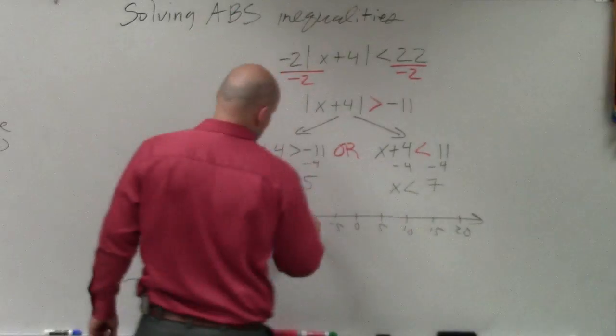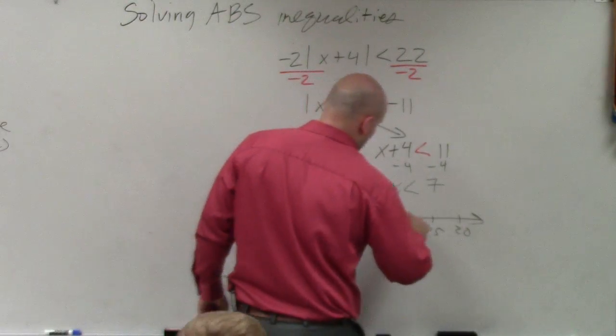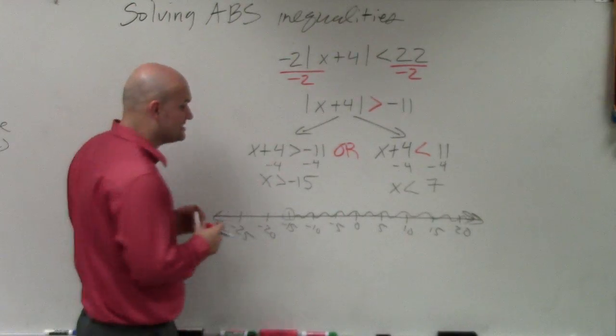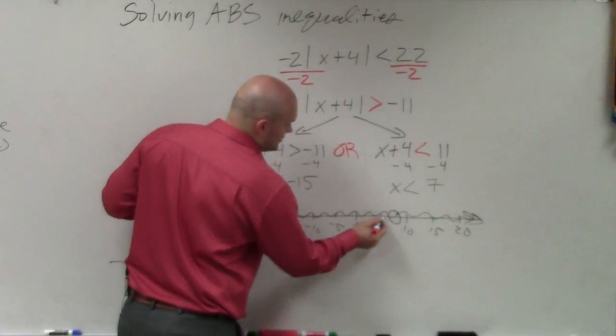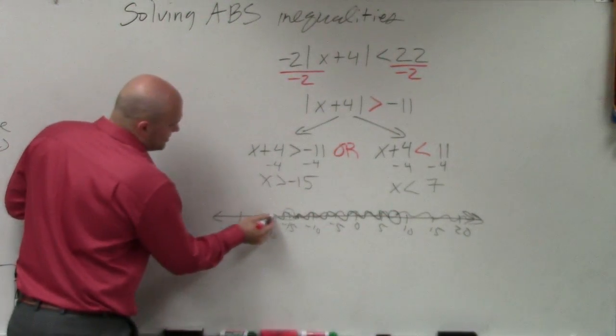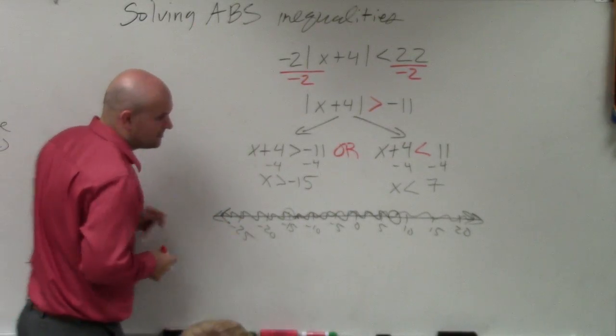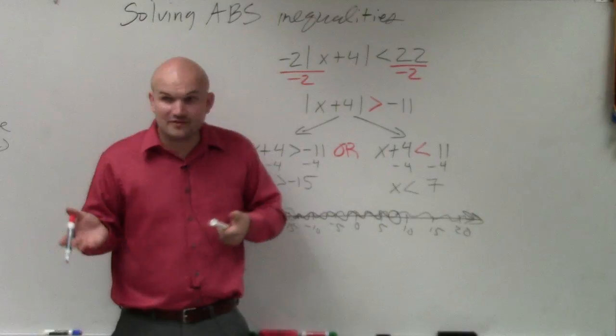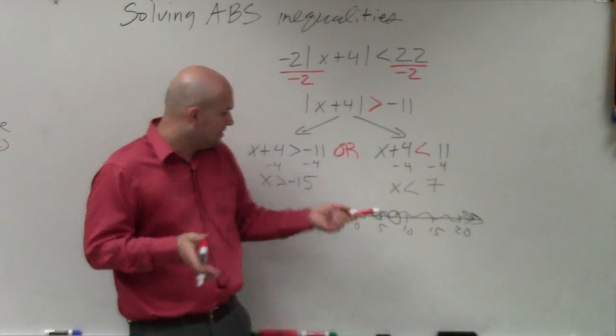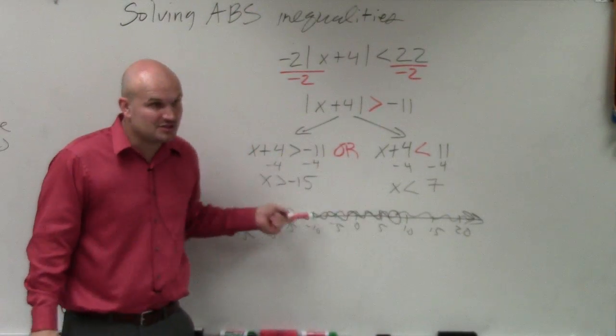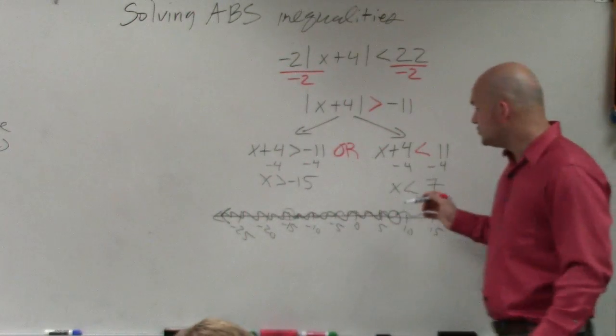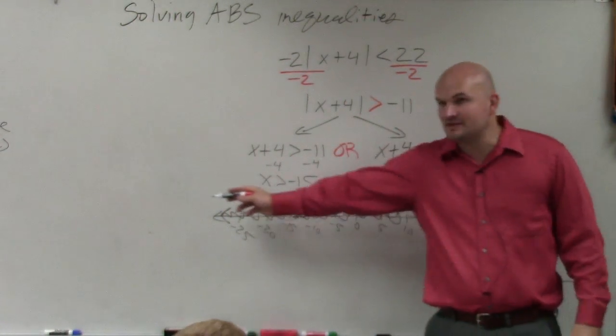So this is negative 15, which is going to be all the values this way. And then x is less than 7 is going to be an open circle this way, which is going to be all the values that way. Now, remember, when we're dealing with an or, it could be one or the other. Right? It's not the intersection. We know that they intersect in between these two values, but we're looking for one inequality to be true or the other. So if you guys see, one graph goes infinitely to the left. The other graph goes infinitely to the right.